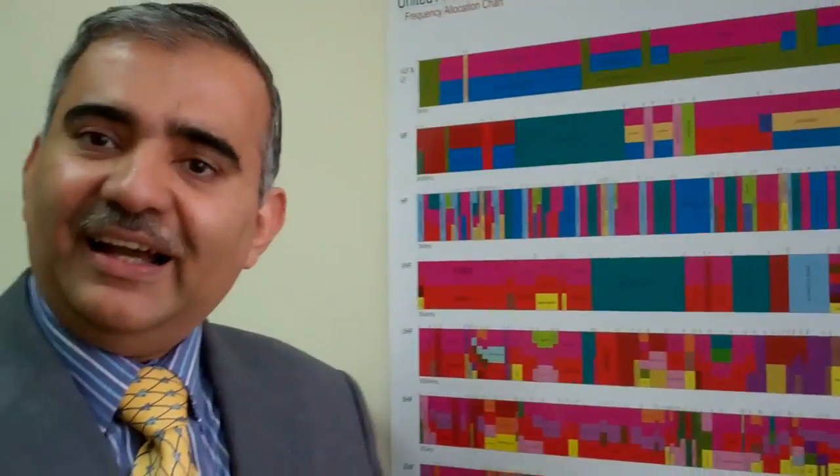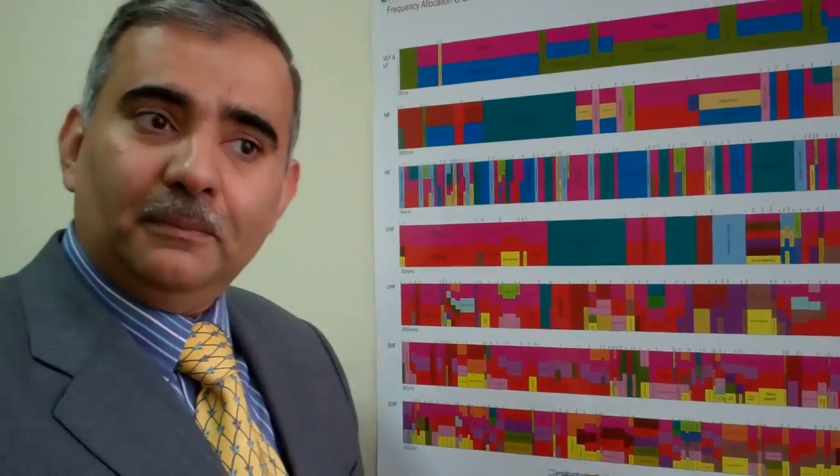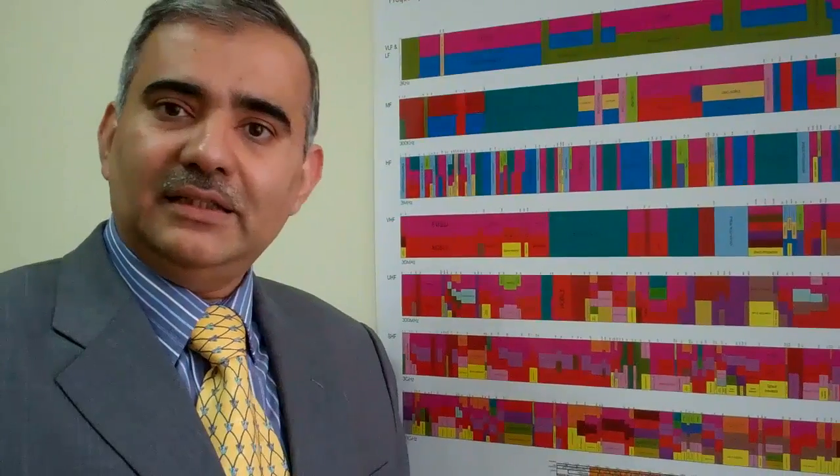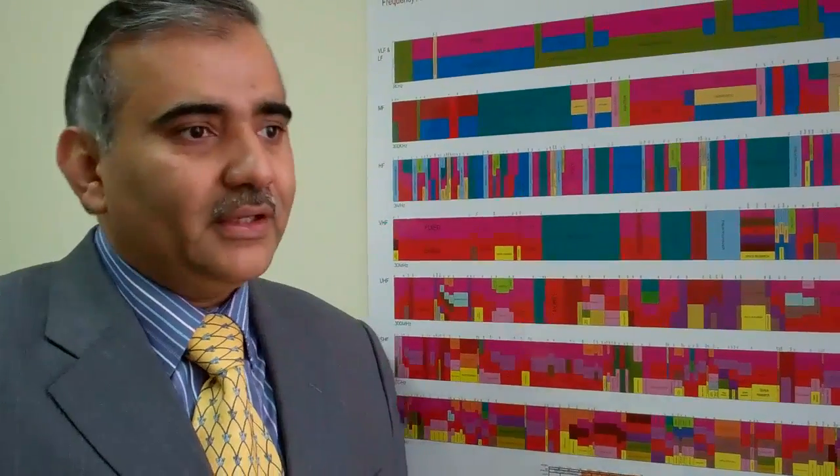And the different colors represent the different radio services. A radio service is basically the name given to a particular type of application. For example, fixed service, mobile service, aeronautical mobile and we can see here radio navigation, broadcasting which we commonly see as television and radio.